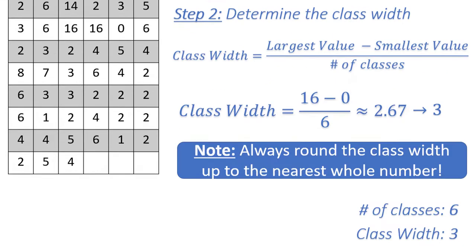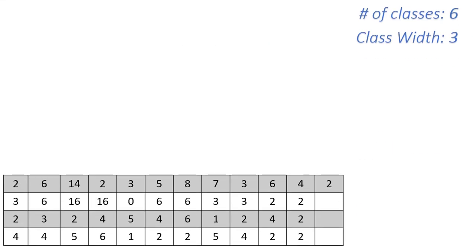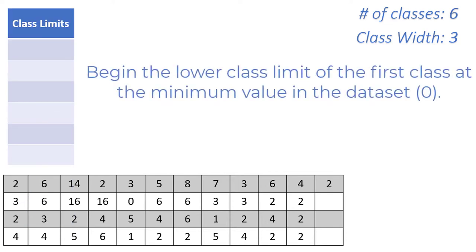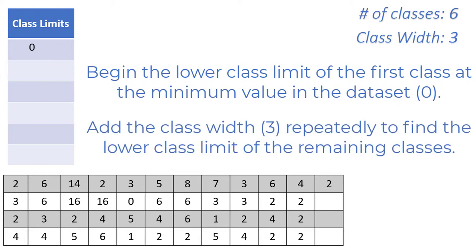Next we move on to our third and final step, which is to actually create the frequency table. First create a column titled class limits, and start with the minimum value in your data set, which in our case is 0. Then start adding the class width of 3 until you have the desired number of classes — 6 in our case. So 0 plus 3 is 3, plus 3 again is 6, then we have 9, 12, and 15. These six numbers represent the minimum value for each of our six classes.